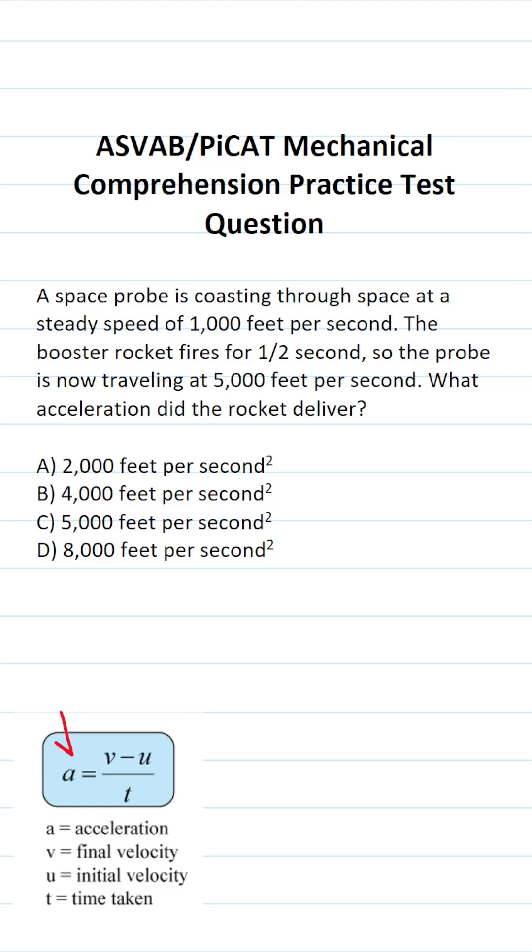For this one, we want to calculate acceleration. That's going to be A = (V - U) / T, where V stands for your final velocity and U stands for your initial velocity.